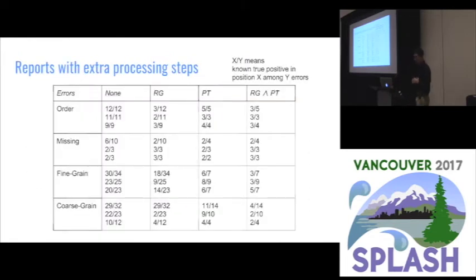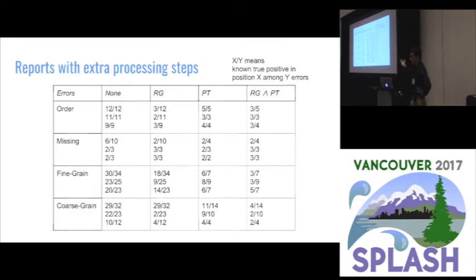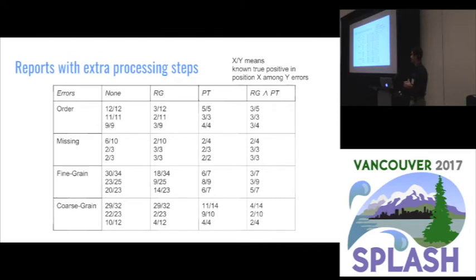Briefly, about some optimizations: PT is the probabilistic types and RG is something called a rule graph. The rule graph was used as a ranking feature and the probabilistic types were used as a filtering feature. The rule graph ranks things much higher than without it, and the probabilistic types filter out rules we know are false positives — combining these two gives us something that looks fairly nice.